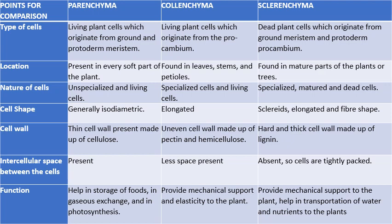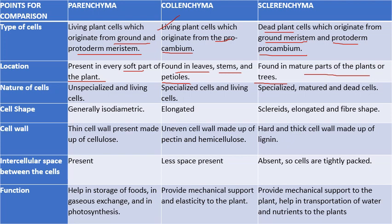Comparison between parenchyma, colenchyma, and sclerenchyma: Parenchyma cells are living, derived from ground meristem and protoderm. Colenchyma cells are also living, originating from procambium. Sclerenchyma cells are dead, originating from ground meristem, protoderm, and procambium. Location: parenchyma is in soft parts of the plant; colenchyma is in leaves, stems, and petioles; sclerenchyma is in mature parts of plants. Nature: parenchyma cells are unspecialized and living; colenchyma cells are specialized and living; sclerenchyma cells are specialized, mature, and dead.